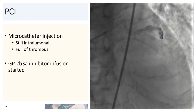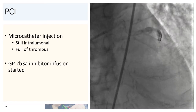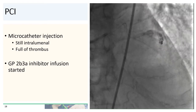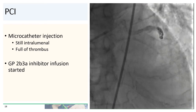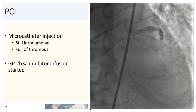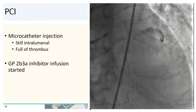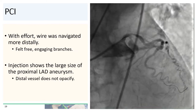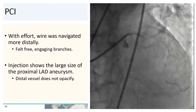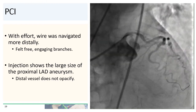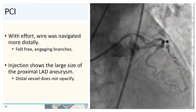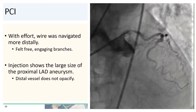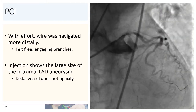We did another microcatheter injection of contrast, which demonstrated that we were still intraluminal. The LAD was clearly full of thrombus, so we decided to start a GP2B3A inhibitor infusion. With a lot of effort, we were eventually able to wire the LAD more distally. It did feel free and was freely engaging all of the side branches.